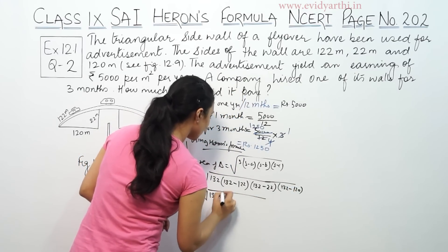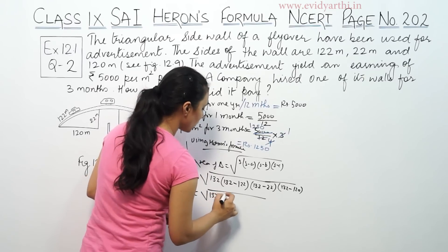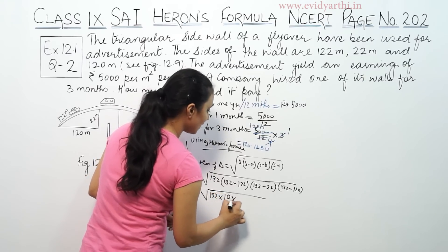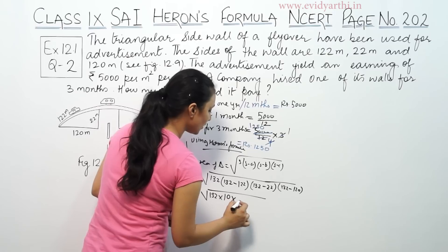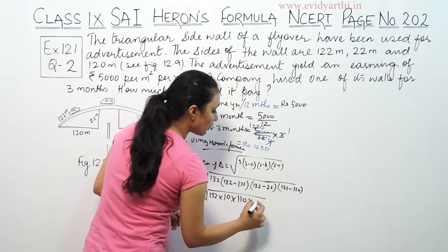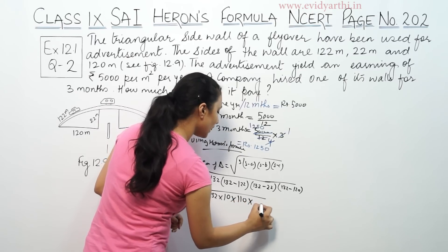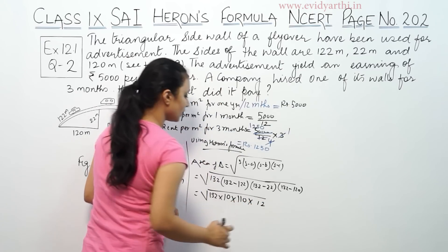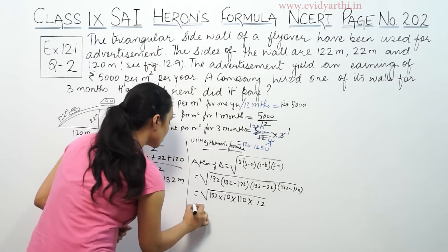So we have 132, minus 122 is 10, minus 22 is 110, minus 120 is 12.